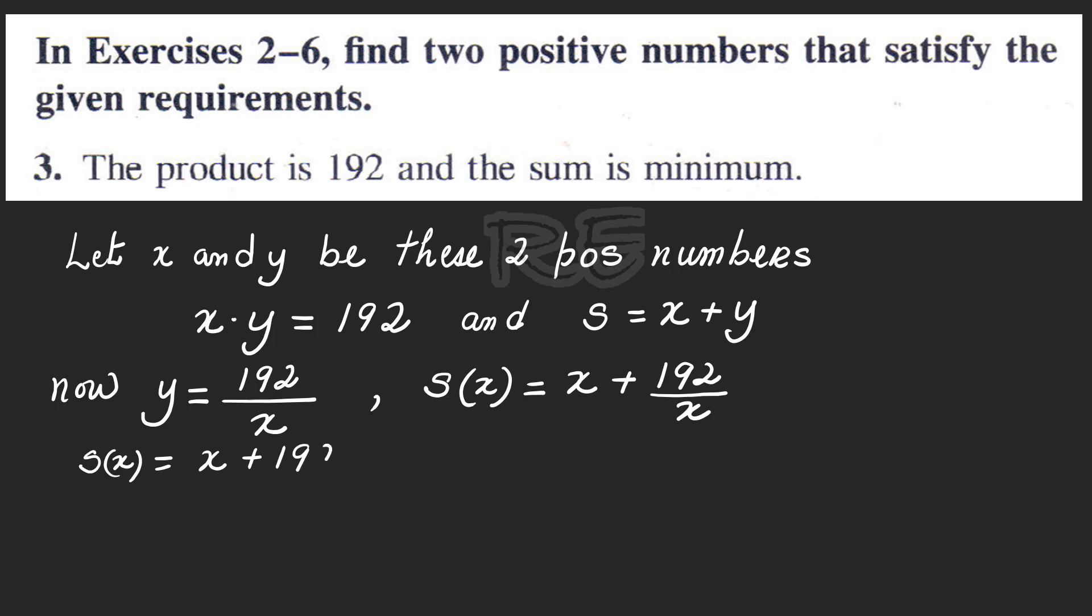S(x) can be written as x plus 192 times one over x, which is x to the negative one.